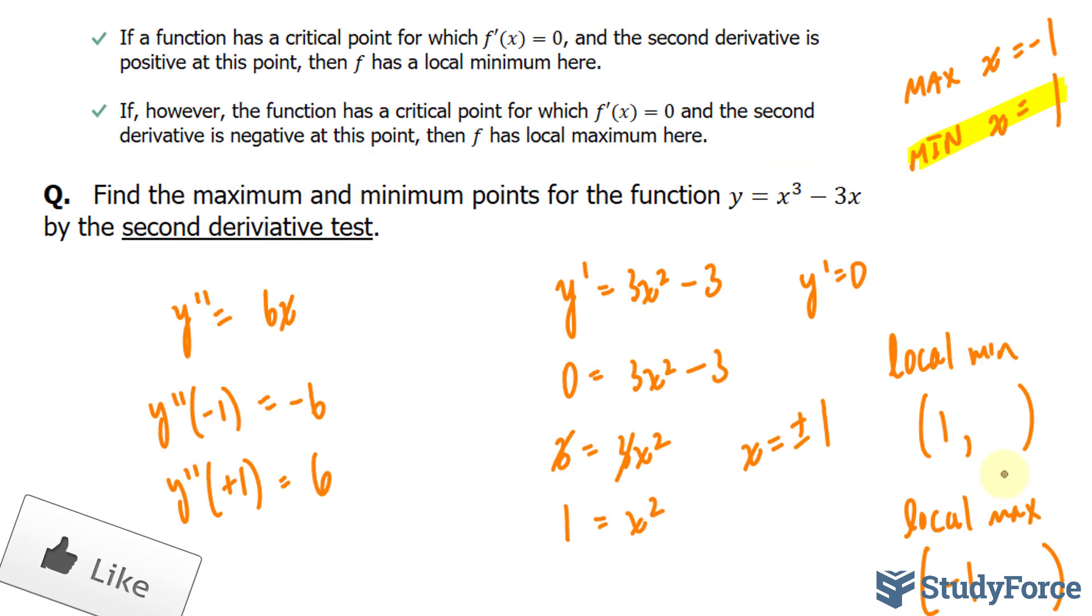So to find out the y-coordinates as outlined in that previous video, in case you didn't watch it, we'll substitute these values into here. So here, 1 to the power of 3 is 1, minus 3 times 1 is 3, so that's negative 2.